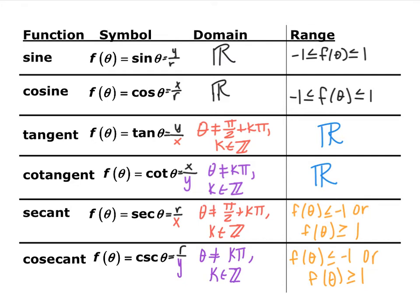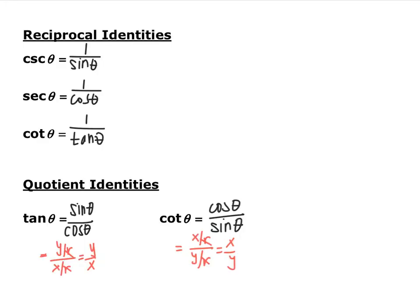Make sure you have all these domains and ranges in your notes. Now for reciprocal identities: cosecant is 1 over sine, secant is 1 over cosine, and cotangent is 1 over tangent. We've been talking about these since the beginning. Also, tangent of theta equals sine of theta divided by cosine of theta — sine is y over r, cosine is x over r, the r's cancel to give y over x. Cotangent is cosine over sine, the reciprocal of that.